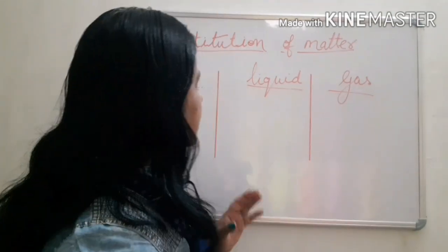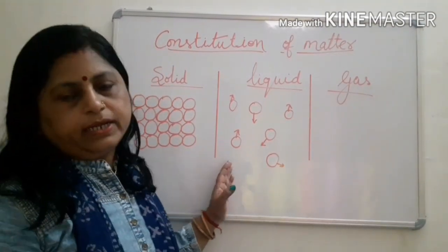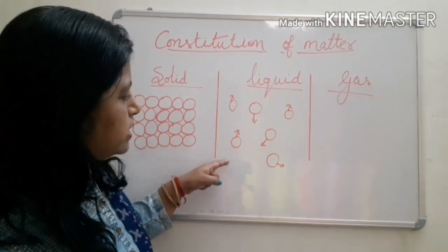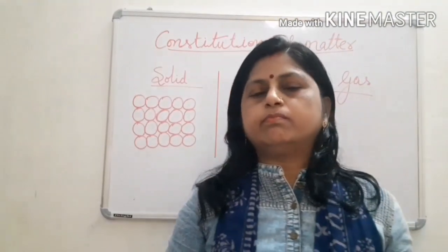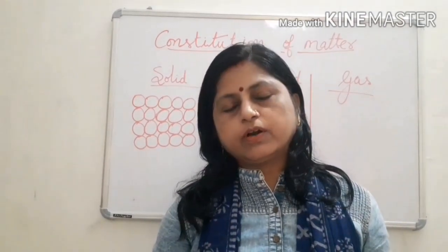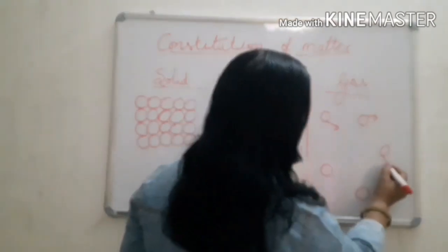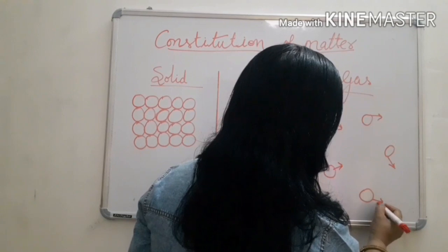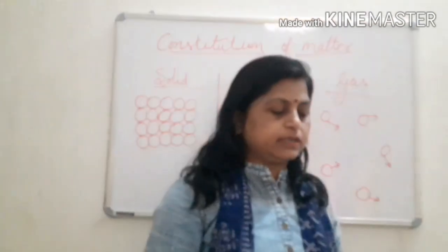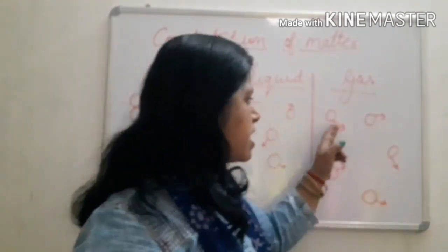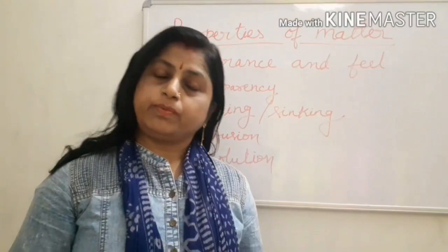In liquid, particles are less tightly packed with each other and they can move a little. So liquids have a fixed volume but do not have a definite shape. In gas, the particles have very little hold on each other and they can therefore move far apart from each other. Hence gases have neither a fixed nor a definite volume.